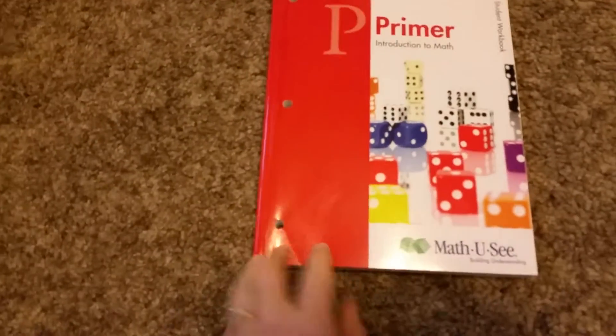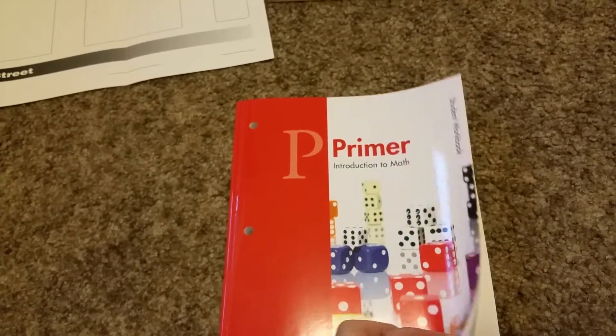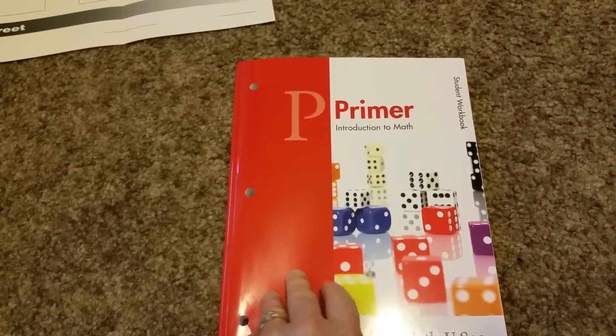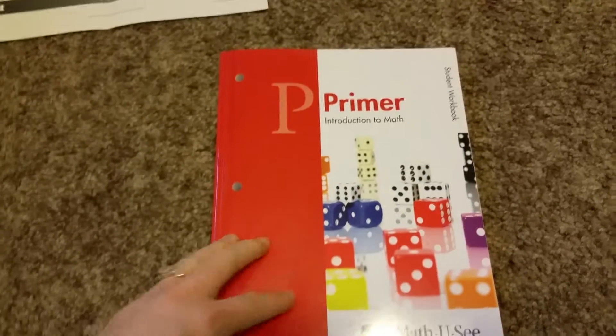So the kindergarten one, this is the student workbook. It's really thick, consumable because you rip out and use the worksheets. But it comes with it. The teacher pack comes with the DVD. I don't know where mine is. I don't really need it for kindergarten. It's self-explanatory.